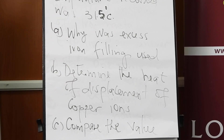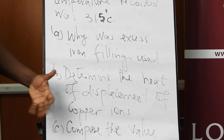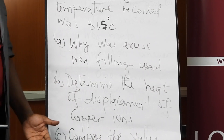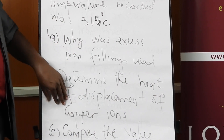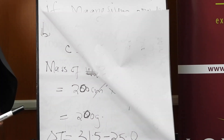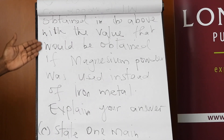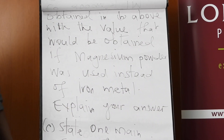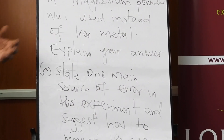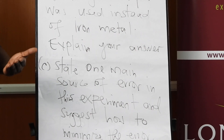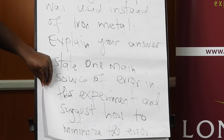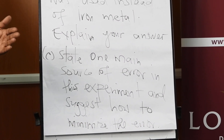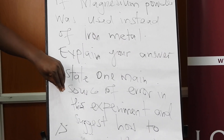We shall also compare what happens if magnesium is used instead of iron, and finally ask what sources of error exist in this experiment — conditions that may affect the answer — and how we can minimize those errors to get a more accurate result.